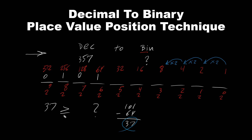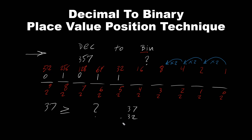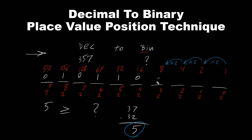Does 37 greater than or equal 32? Yes, it is greater than 32. So we have to put 1. And every time it's on, we subtract to get the new value. Therefore 37 minus 32 is 5. Now 5 is our new value. Does 5 greater than or equal 16? No. So we put 0. Does 5 greater than or equal 8? No. So we put 0.